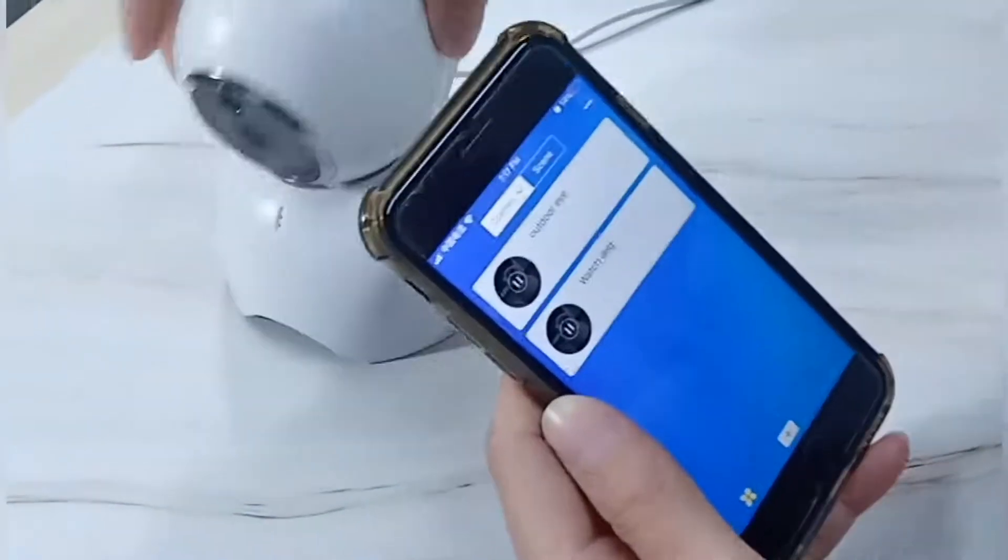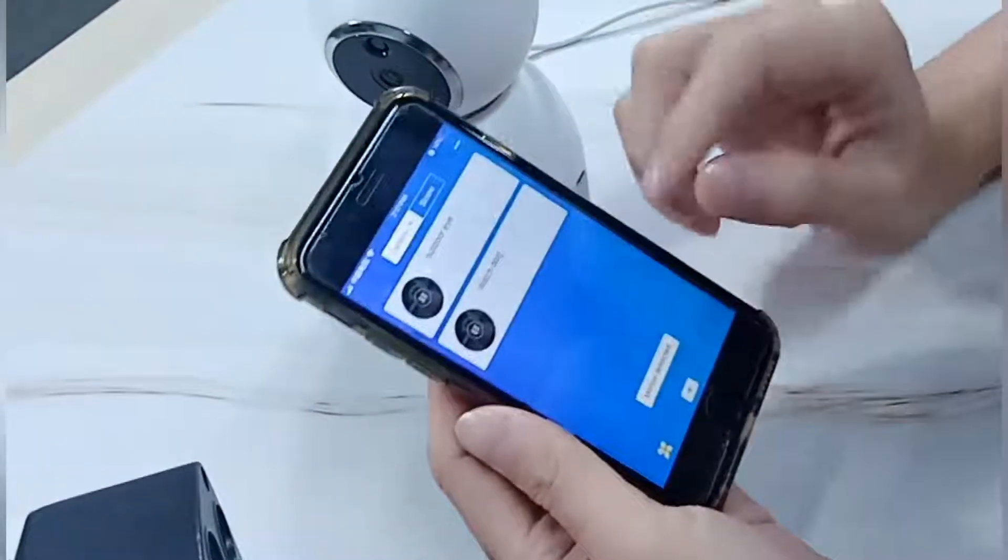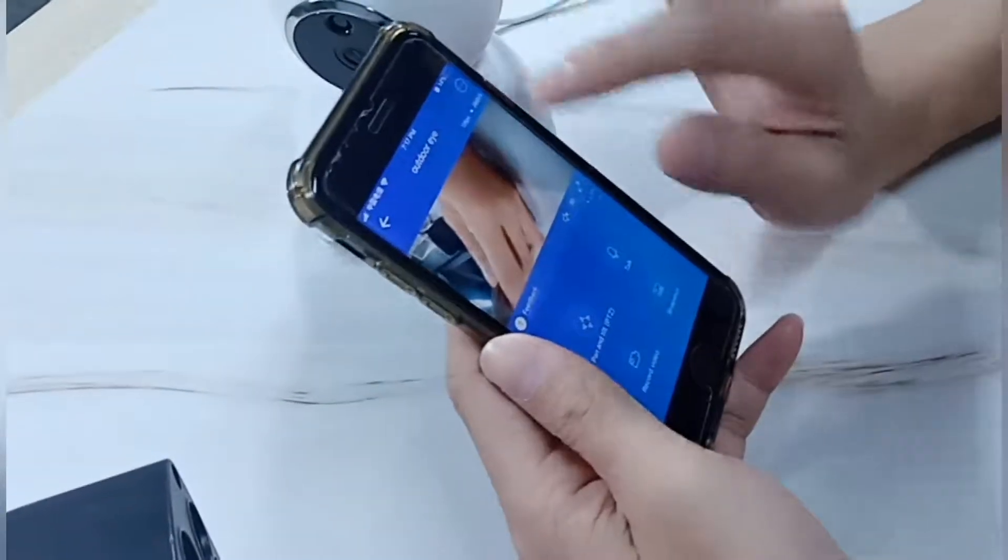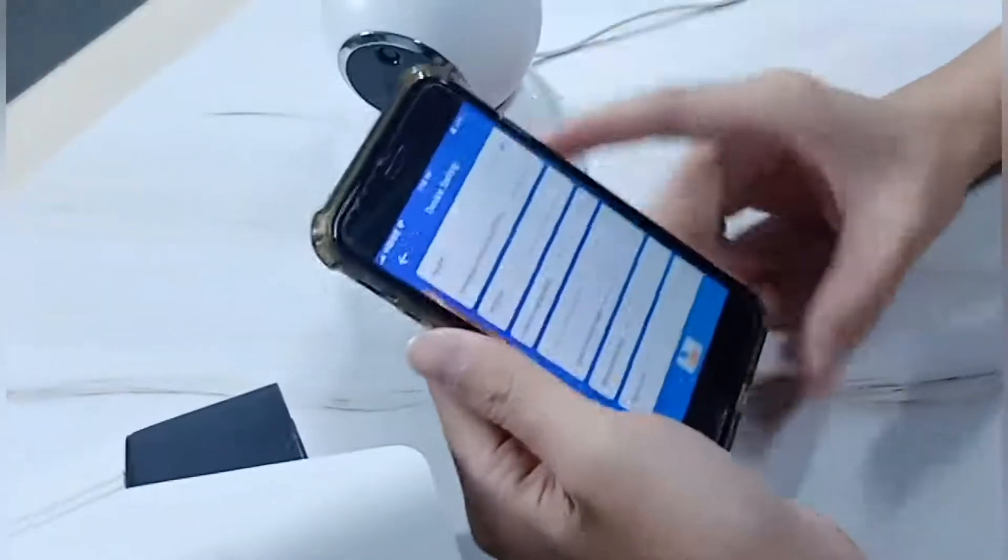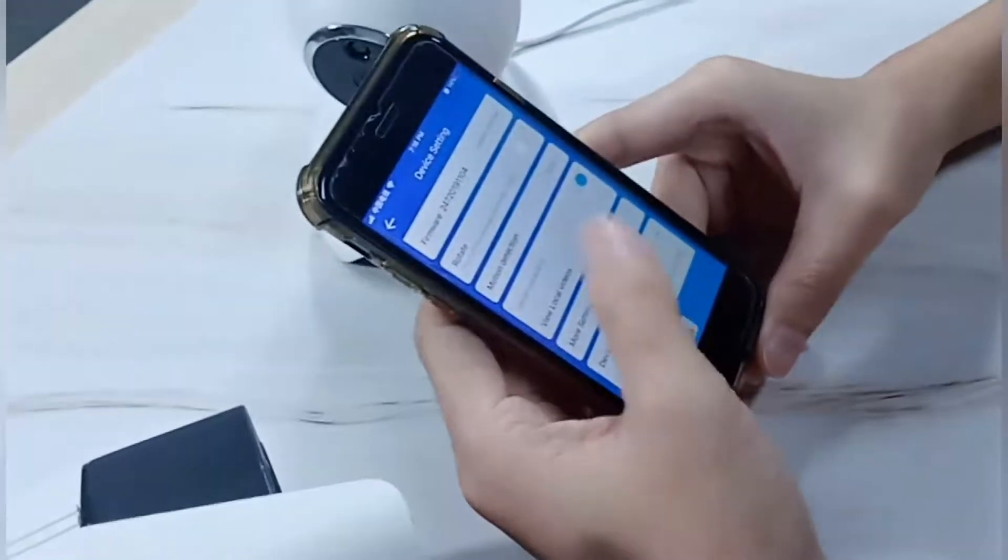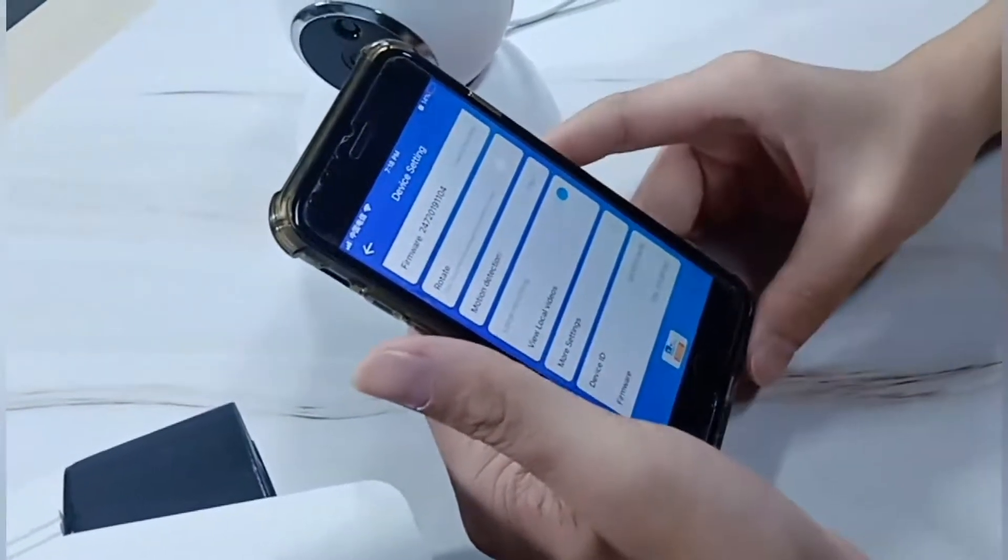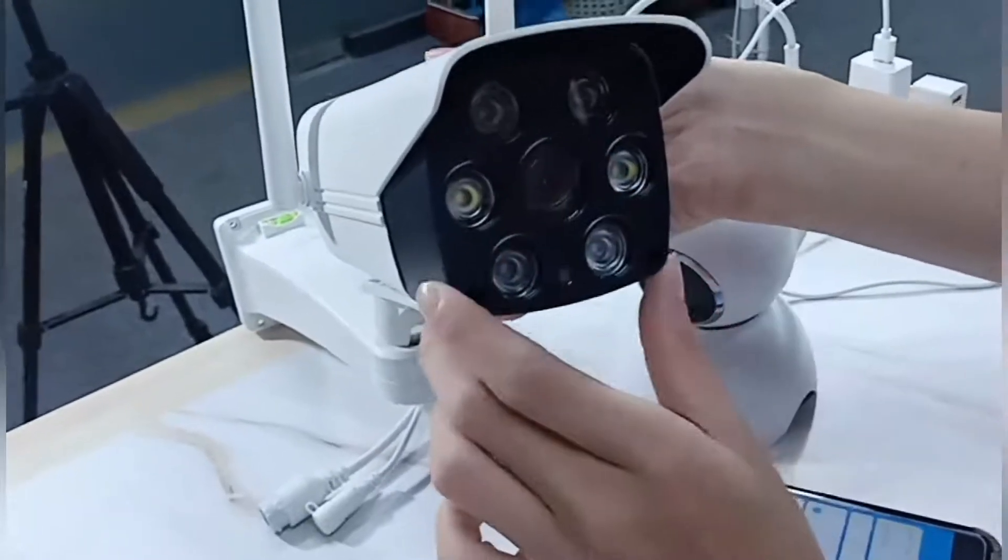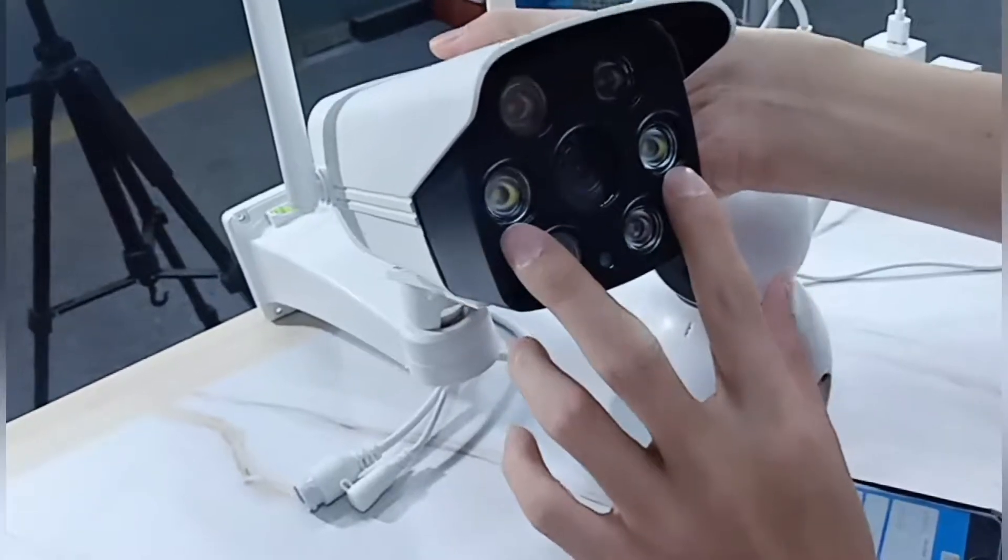These two cameras have been added in the app. In the E-Weiling app? In the E-Weiling app, yes. But for the outdoor camera, it only works in IR night vision for four IR LEDs. And these two white LEDs are not working.